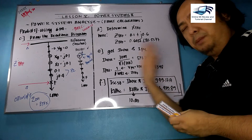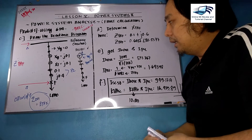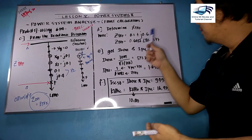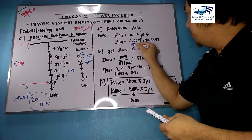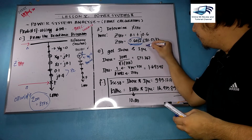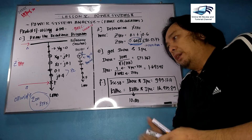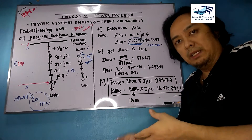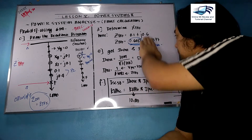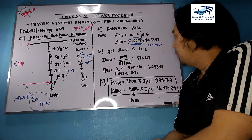We need to determine the Thevenin impedance by adding all impedances in series: 0.1 (generator) + 0.1 (transformer) + 0.1 + j0.4 (line) = 0.3 + j0.4, which in polar form has a magnitude of 0.6082. Our main goal is the magnitude for fault current calculations, though phase angles are useful for further analysis. We then proceed to get I-base and I-PU using standard equations.